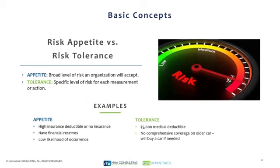Risk appetite versus risk tolerance: the appetite is the overall broad level of risk you'll accept; the tolerance is the specific threshold. An example is insurance — are you going to have insurance or not? Do you have your financial reserves? Then your tolerance would be the size of your deductible, whether you'll have comprehensive versus non-comprehensive coverage. This helps you understand the appropriate level. It's one thing to say we'll just buy insurance; it's another to say we have to keep functioning, but we're willing to only recover in three days versus immediately.